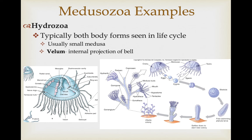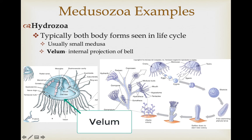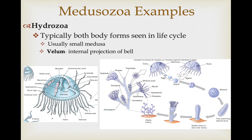Hydrozoans are also medusazoans. They typically go through both life cycle phases—the medusa phase and the polyp phase. Usually the medusa phase is relatively small, and the dominant form is the polyp. Hydrozoan medusae can be distinguished from others by having an internal projection with a rounded bell called the velum—unlike the velarium in box jellies, but serving the same function of helping to focus jet propulsion for swimming. They're not nearly as efficient as box jellies in speed and directional movement.